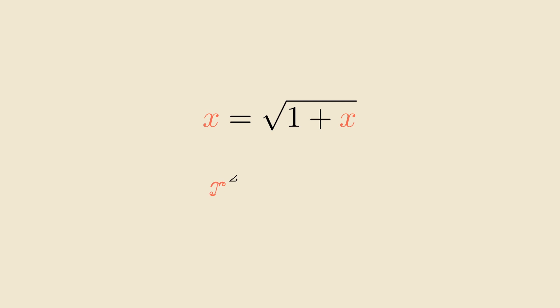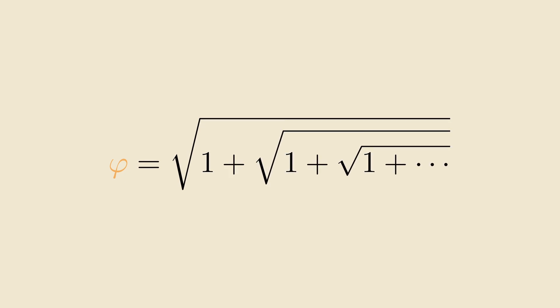Now, squaring both sides gives x squared equals 1 plus x. And if we move it all over to the same side, we get the familiar polynomial that has a root of the golden ratio. Therefore, the golden ratio can be expressed by these infinitely nested square roots.